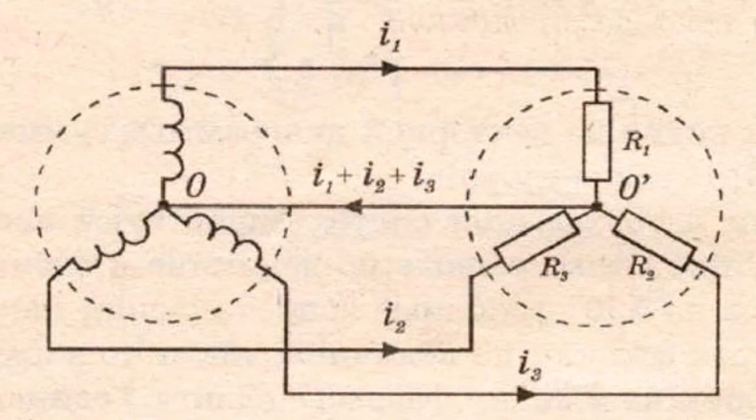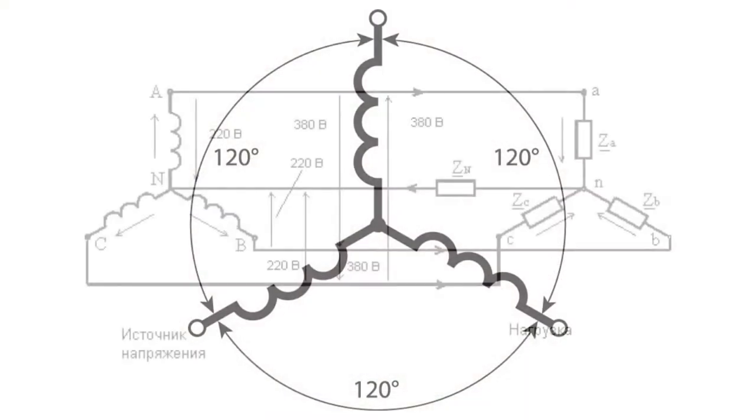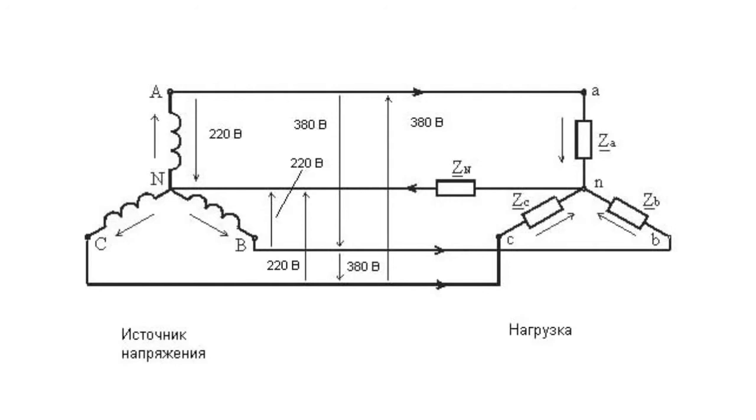A three-phase generator is usually indicated as three stator coils positioned at an angle of 120 degrees to each other. In case the ends of the stator windings are connected together, the connection is called zero point. This type of connection is also known as a star connection, as the shape of this type of connection resembles a three-beam star. In this case, wires, also called line conductors, are attached to the inputs of the coils.